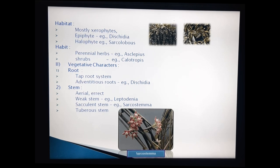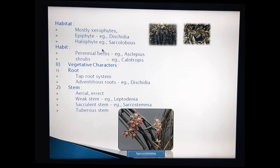Next, one plant is grown as Sarcolobus. The second picture is Sarcolobus, grown as a halophytic plant. Halophytic means plants that grow in salt conditions. Most of these plants are xerophytic; only Dischidia is epiphytic and Sarcolobus is halophytic. This is the habitat.